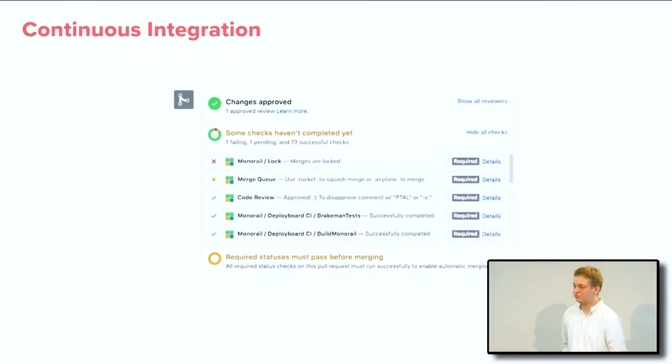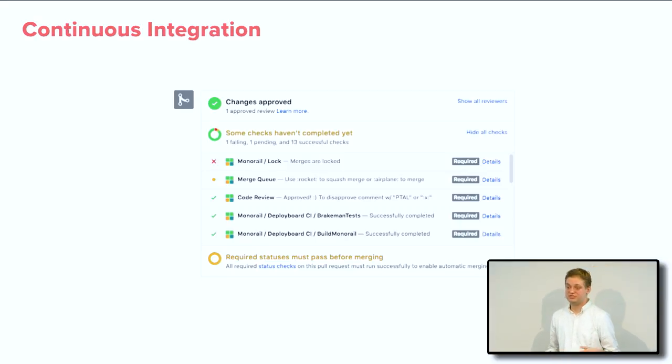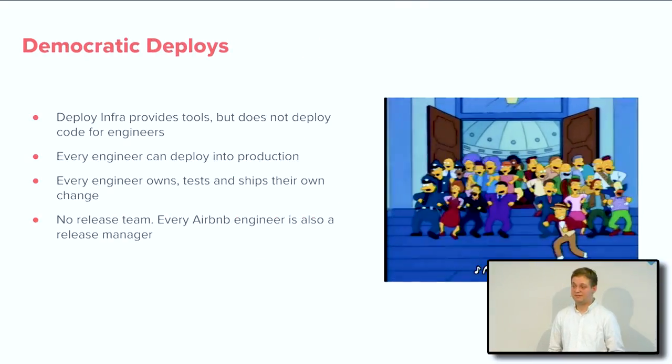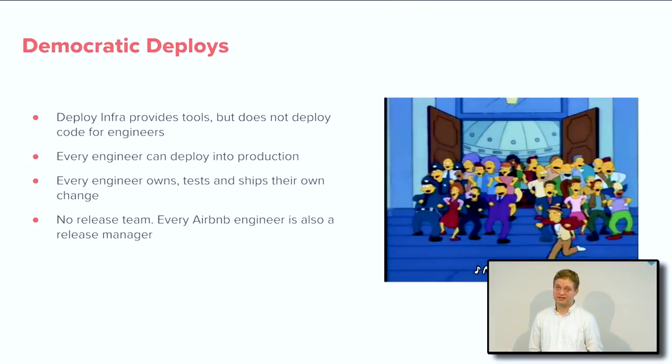Here's an example of our continuous integration. You can see there's a pull request on GHC — GitHub Enterprise, our internal GitHub cluster. There are all these checks you have to go through, making sure you don't break MonoRail. Only once you've passed all of these checks can you actually merge your change into master. And even then, you still have to go through a pipeline.